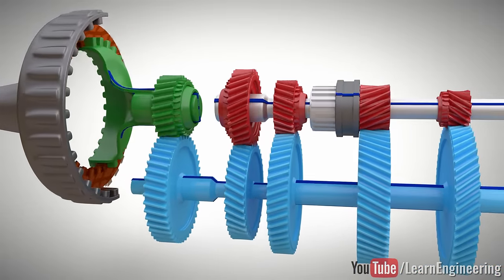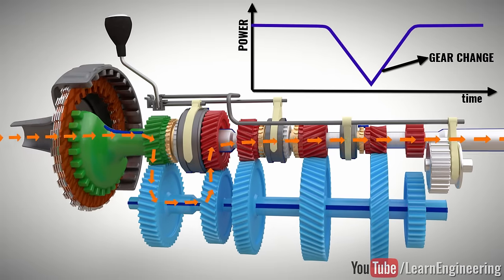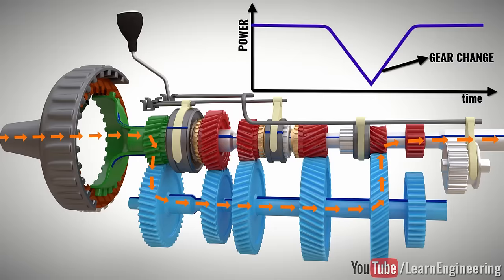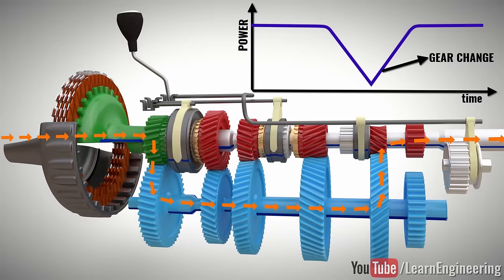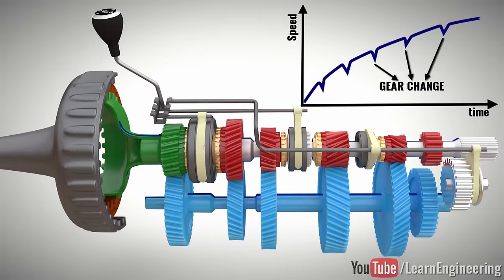So, every time you need to change the gear, you must disengage the clutch. This also means power discontinuation and an associated speed drop during the gear change. This is why a manual transmission drive is never a smooth experience.